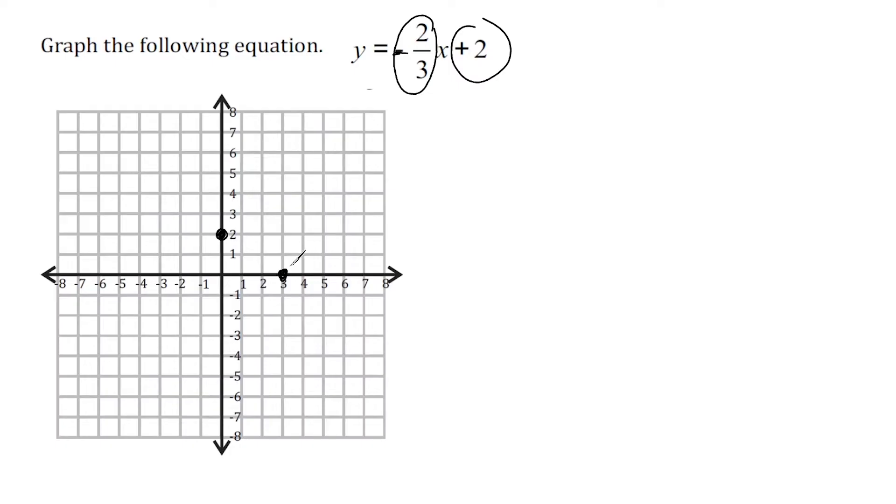And from there, we can continue the same pattern. We can go down 2 and over 3 more. And once you feel like you have enough points, although you really only need 2, but you'd have to line up your ruler perfectly, you would draw a line that passes through those points like that. And voila, that's all there is to it. This line represents this equation right here. Alright, let's go to the next problem.